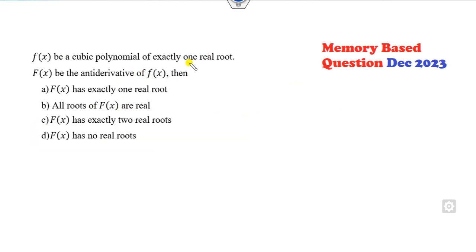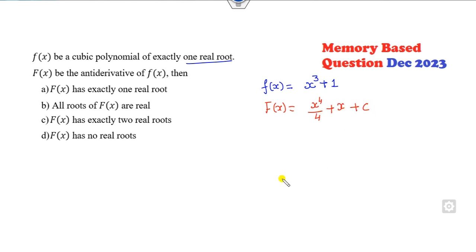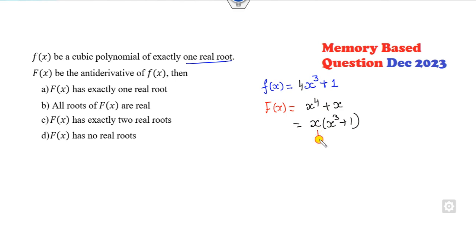F is a cubic polynomial with exactly one real root. Can you think of any cubic equation with exactly one root? The smallest one is here, and capital F is the anti-derivative of this. So that's x⁴/4 + x plus some constant. If I simply take 4x³ + 1 and integrate it, it's x⁴ + x. Taking x as common gives x(x³ + 1). So what are the roots? 0 and −1 — at least two real roots exist. So 'exactly one real root' is cancelled. 'All roots are real' — cancelled. 'No real root' — cancelled.